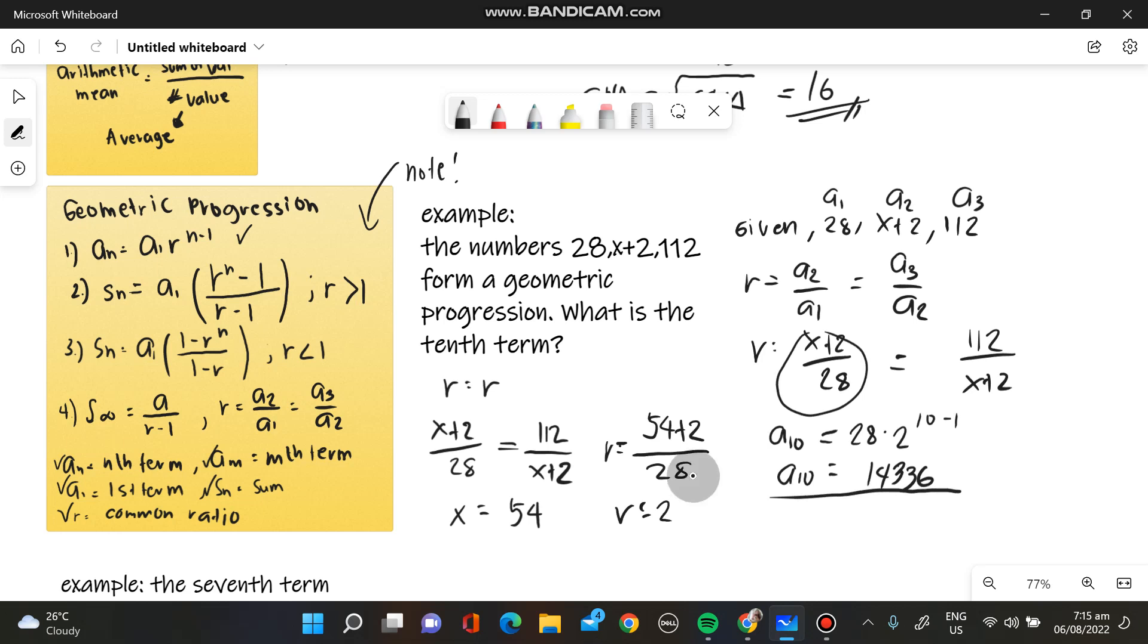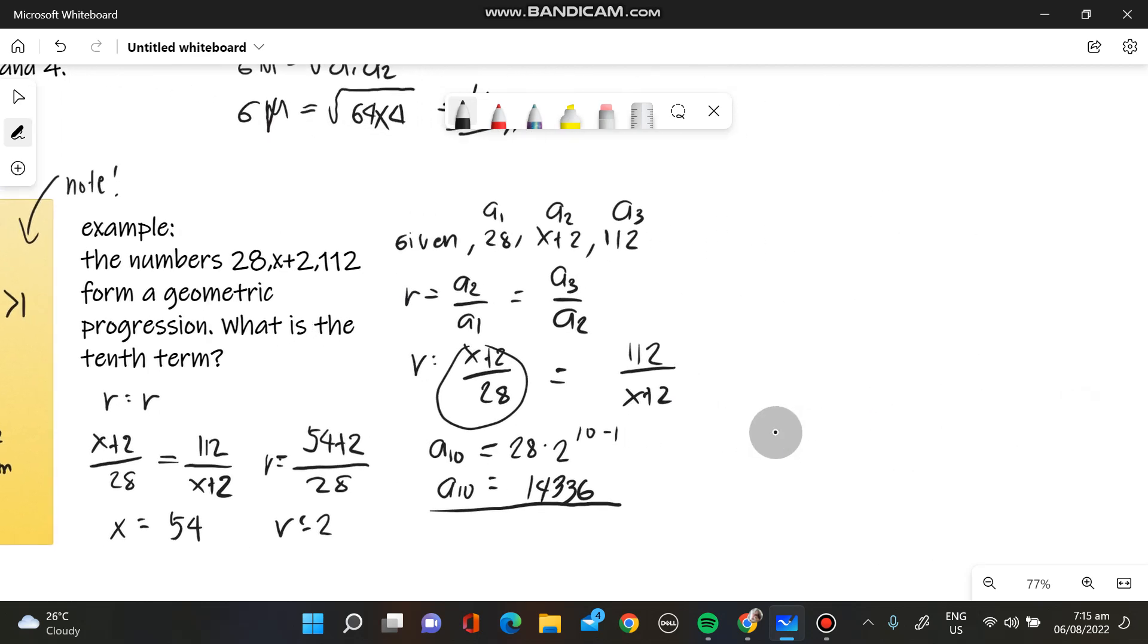Also, we can use calculator technique. By using calculator technique, we use mode 3,6. And then, we have our X and Y value. Our X value would be 1 and 3 because 1 and 3. And then, our Y value would be 28 because 28 is our first term and our third term will be 112.